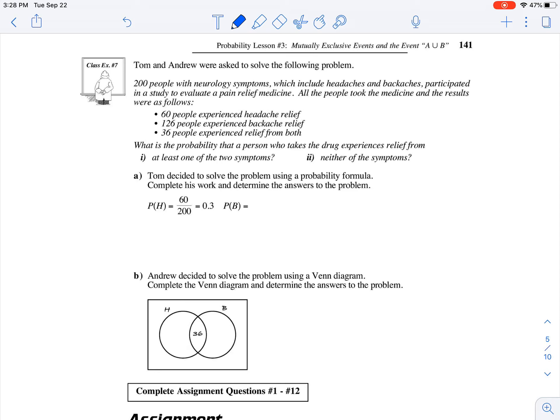Tom and Andrew were asked to solve the following problem. 200 people with neurology symptoms, which include headaches and backaches, participated in a study to evaluate a pain relief medicine. All the people took the medicine and the results were as follows.